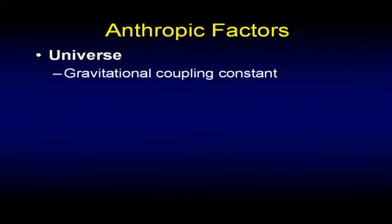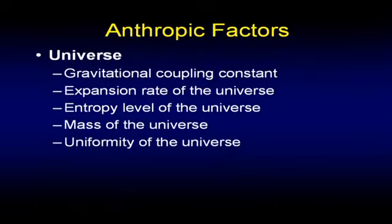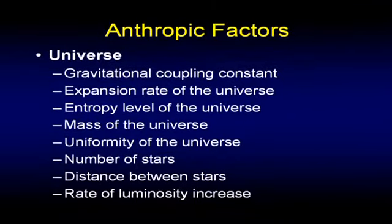The sun factors: the age of the sun, its distance from the center of the galaxy, its mass, its color, its distance from the Earth. Change any of those a little bit and things are either too hot or too cold — you won't have life. And the universe itself: the gravitational coupling constant, the expansion rate, the entropy level, the mass of the universe, the uniformity. Change these just a little and the universe doesn't exist. The number of stars, the distance between stars — all required. Secular scientists called this the anthropic principle — because it's as if the entire universe was designed for man. And they may not have realized how accurate they were: it was designed for man.